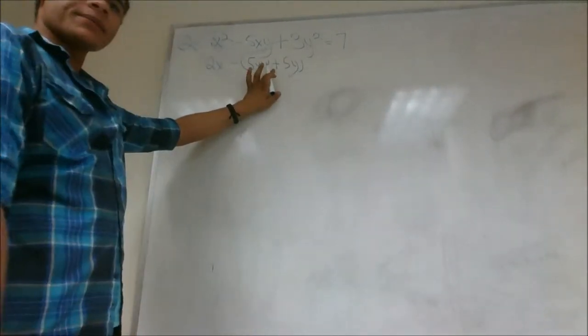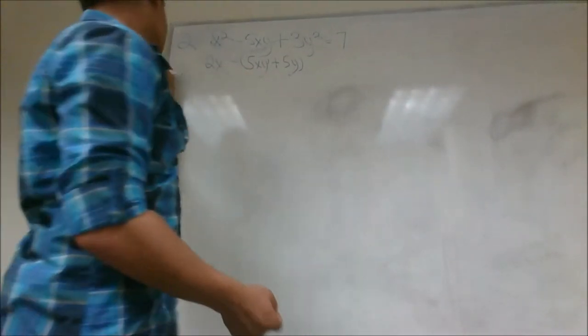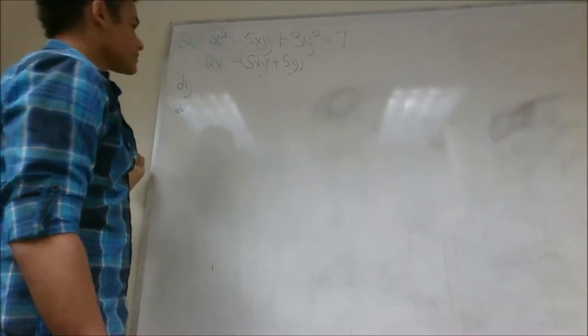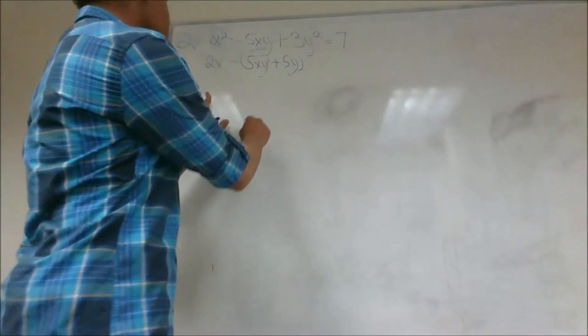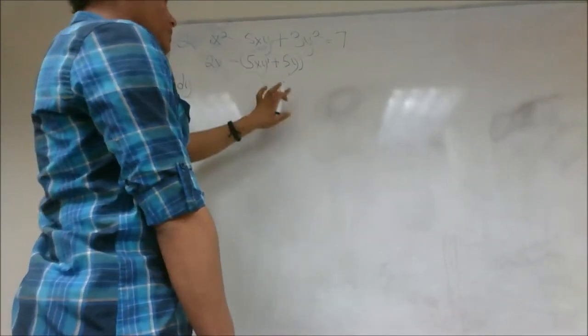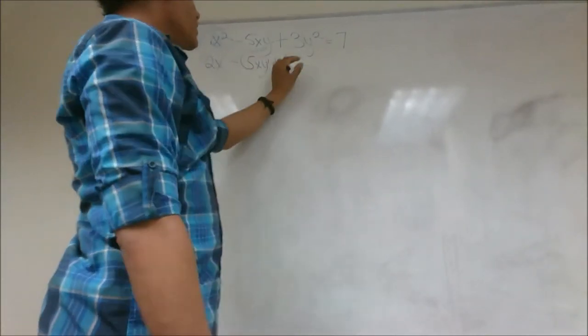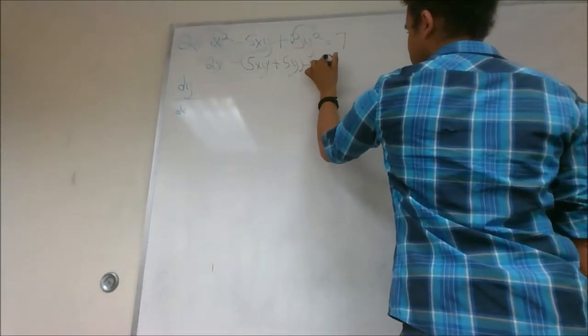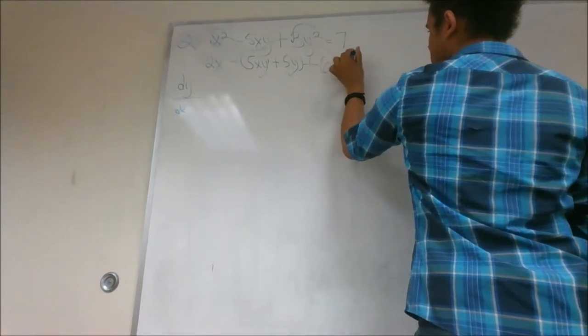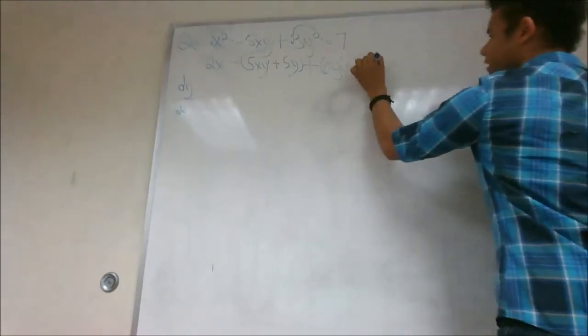And with this y prime, it's just the same thing as saying dy over dx. So after that, and again, same rule applies. Wherever you see a y term, that's why that y prime is there. And then we have plus, here we use our power rule again. So we have 6y y prime equals, derivative of all constants is 0.